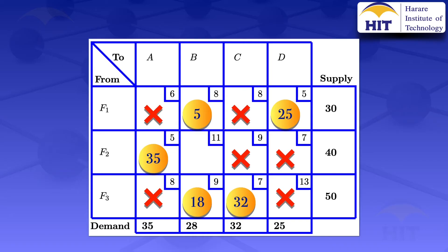For the last cell, which has a unit cost of 11, the supply is 40 but we have already allocated 35 in this row, so the remaining supply is 40 minus 35 = 5. For the demand of 28, we have already allocated 5 and 18, so the remaining demand is 28 minus 18 minus 5 = 5. We can allocate 5 units in this cell.